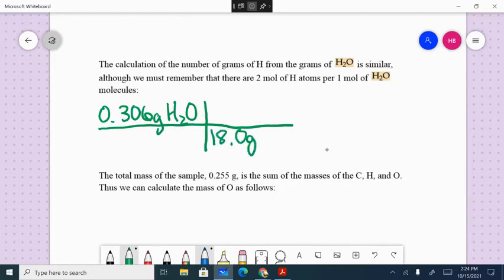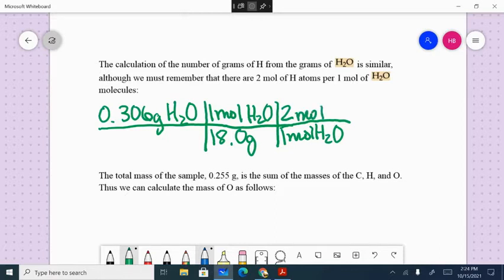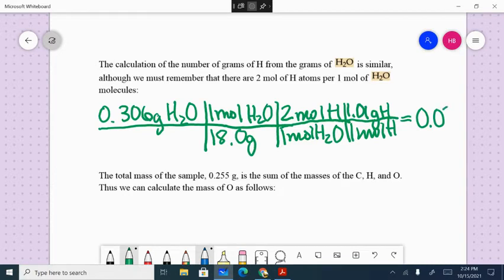I'm going to change that to moles first. And here's the part that you don't want to mess up on. One mole of water has two moles of hydrogen atoms. And the amount of hydrogen produced in this reaction can be calculated as 0.0343 grams.